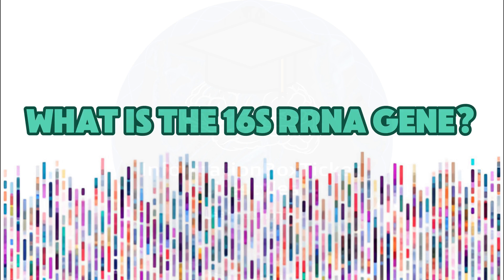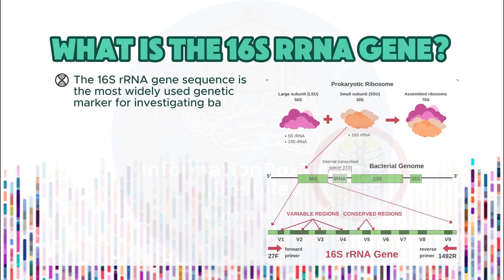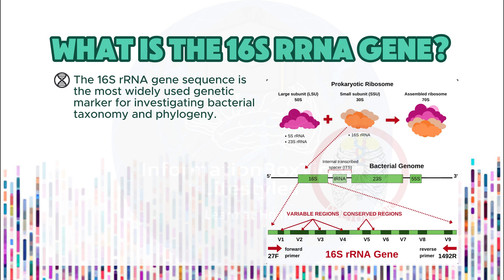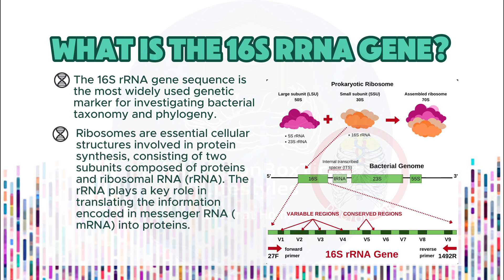The 16S rRNA gene sequence is the most widely used genetic marker for investigating bacterial taxonomy and phylogeny. Ribosomes are essential cellular structures involved in protein synthesis, consisting of two subunits composed of proteins and ribosomal RNA (rRNA).